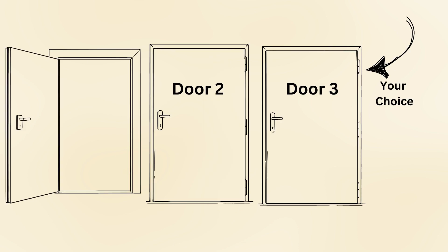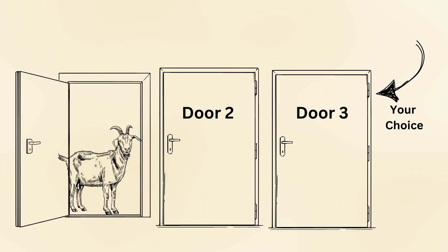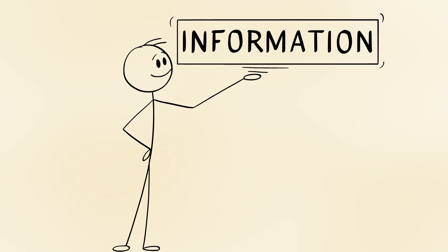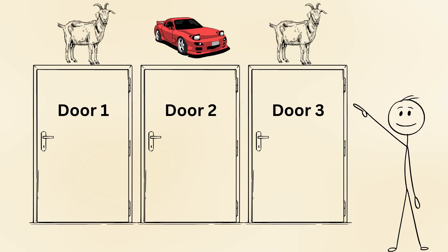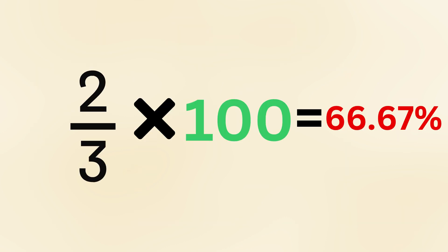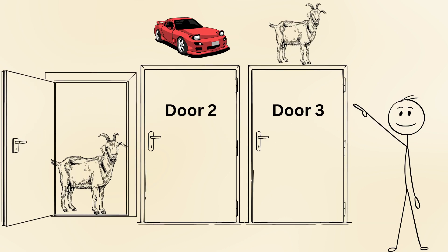The host's action of opening one door, which always reveals a goat, does not change these original probabilities. Instead, it gives you additional information. Since the host will never open a door with the car, if your initial choice was wrong, which is likely given the 2-3 chance, you are left with the door that must have the car behind it if you decide to switch.